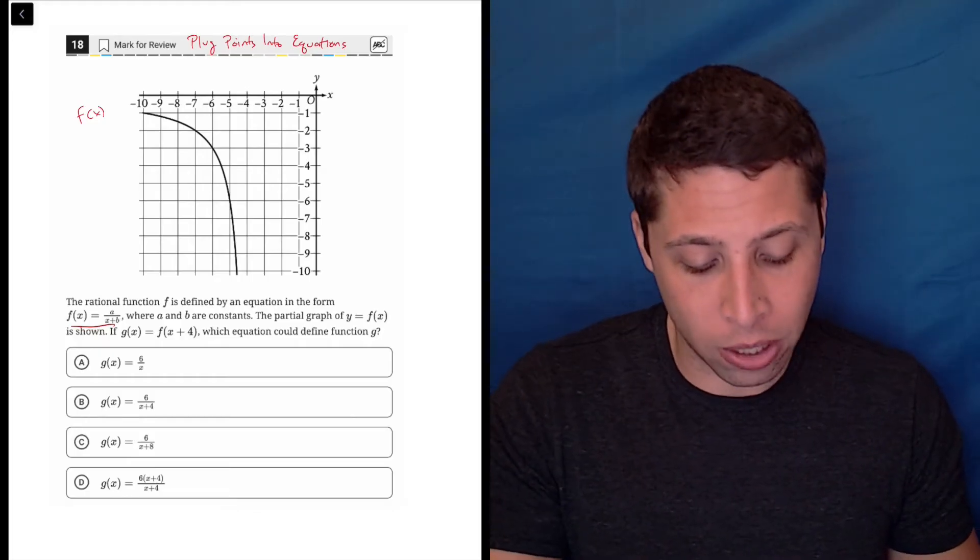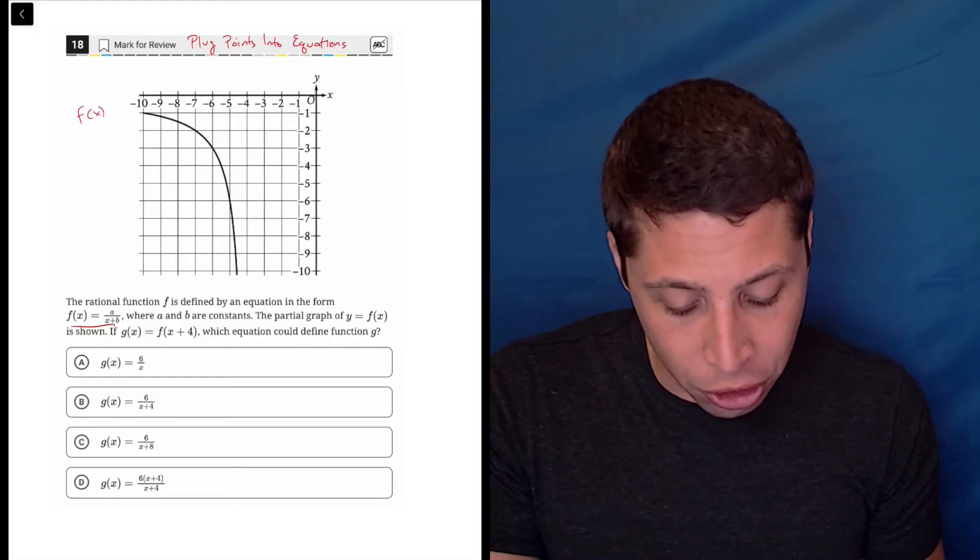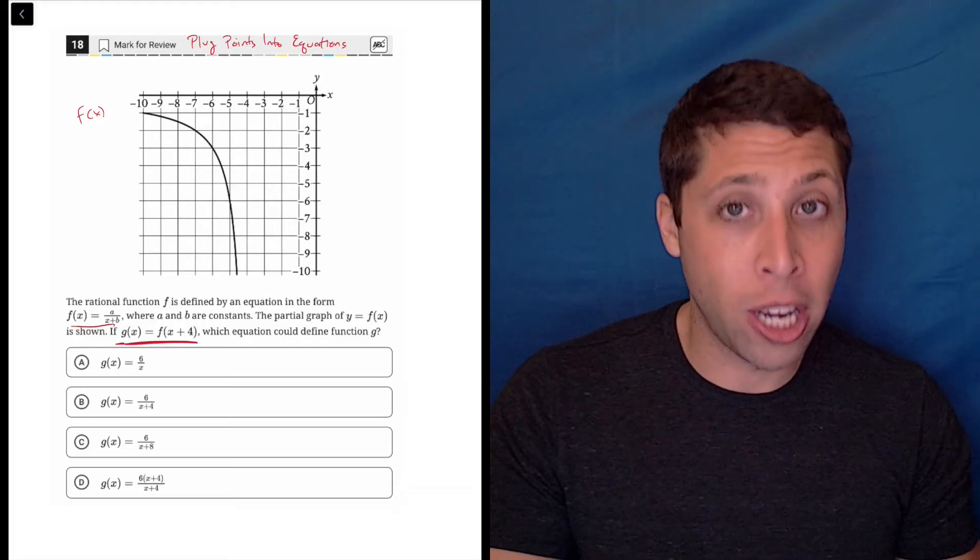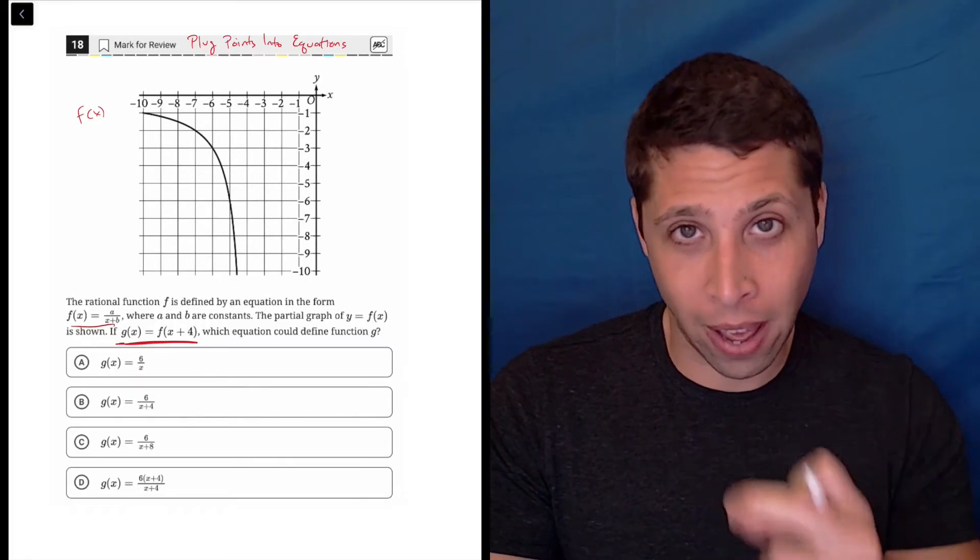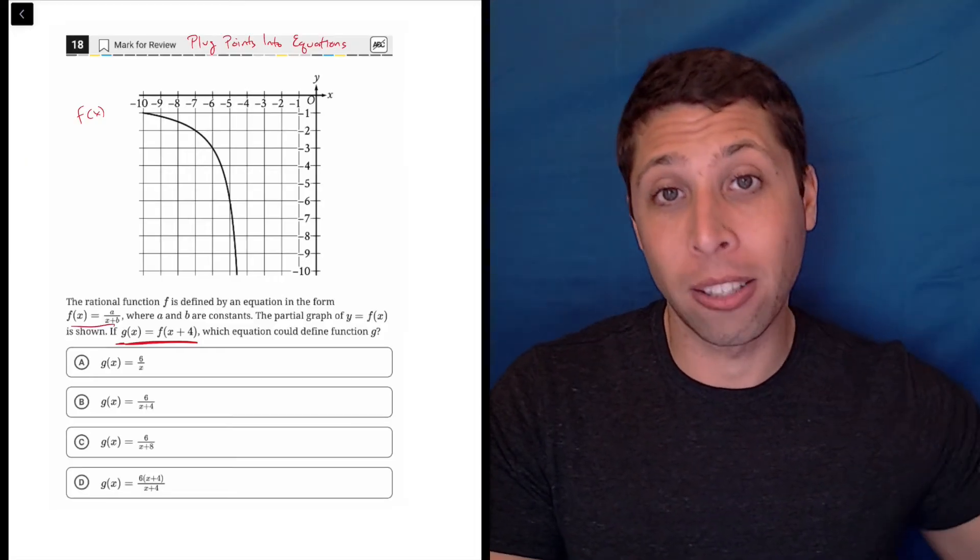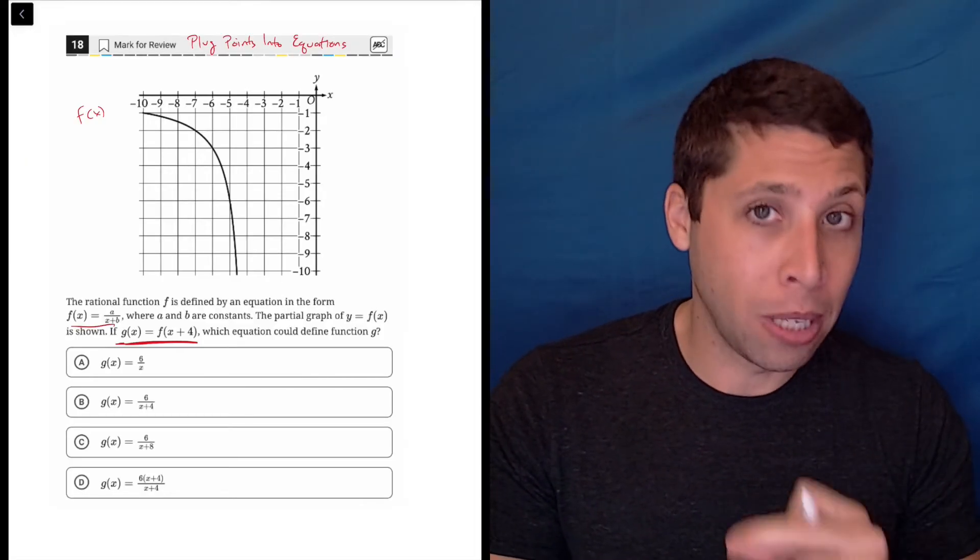What's happening is we're taking that graph, that f, and we're changing it, and it's becoming this g, and those are the equations that we're given in the choices. They're telling us that g of x is equal to f of x plus four. So that's the part we need to memorize.